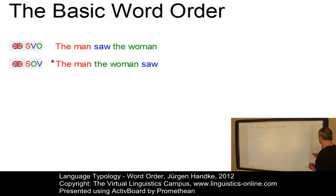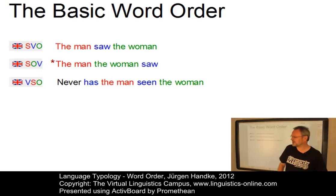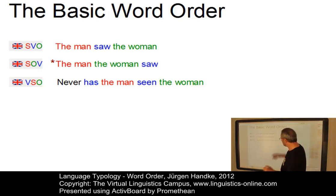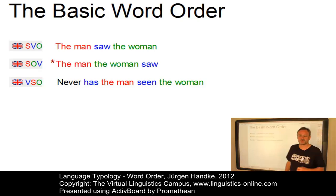VSO, the third of the majority types, is possible in present-day English. 'Never has the man seen the woman.' However, there is an adverbial that is fronted. So we have NEVER as the adverbial, then HAS, the inflected component of the verb, the man as subject, and the woman as object. However, this construction is restricted in many ways — the adverbial has to be negative. 'Never has the man seen the woman' works, but 'very often has the man seen the woman' does not.